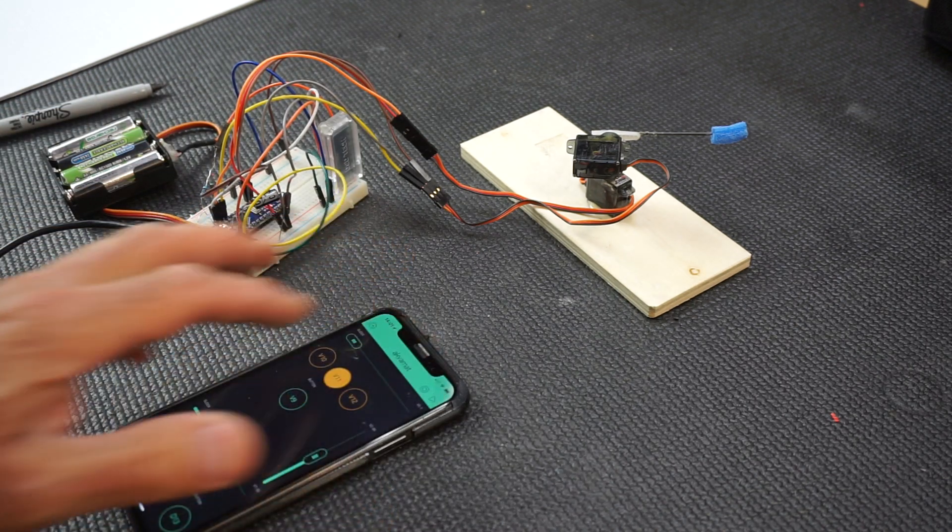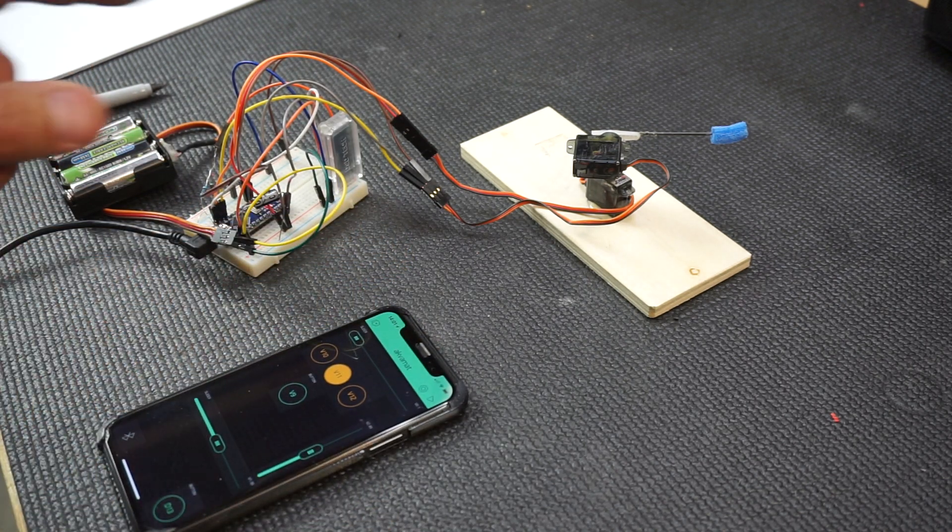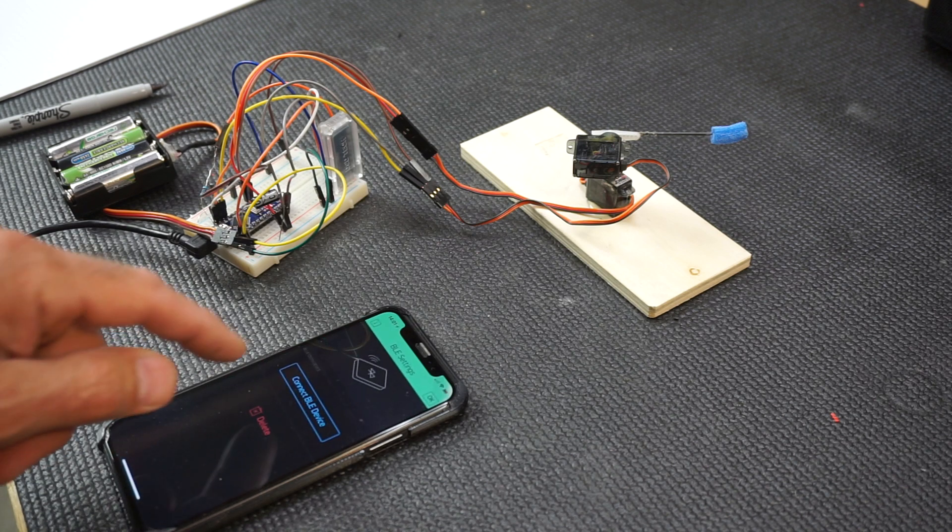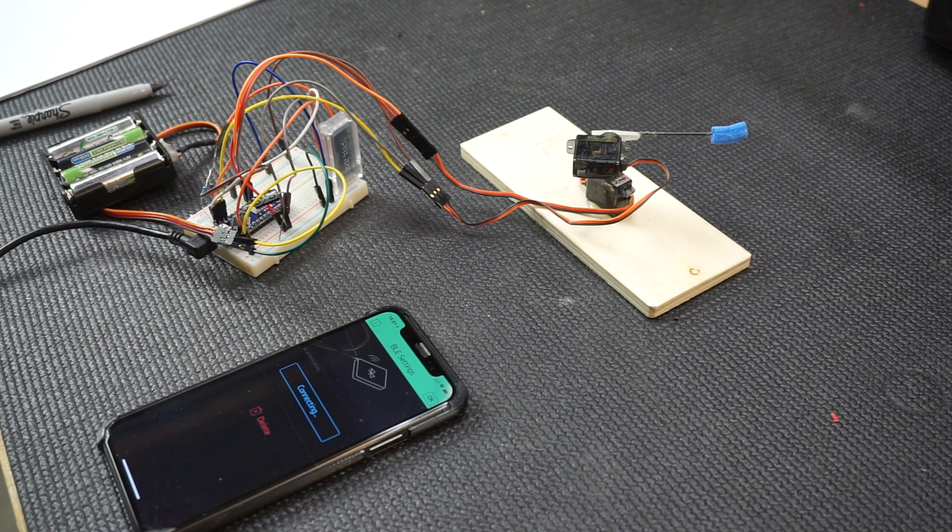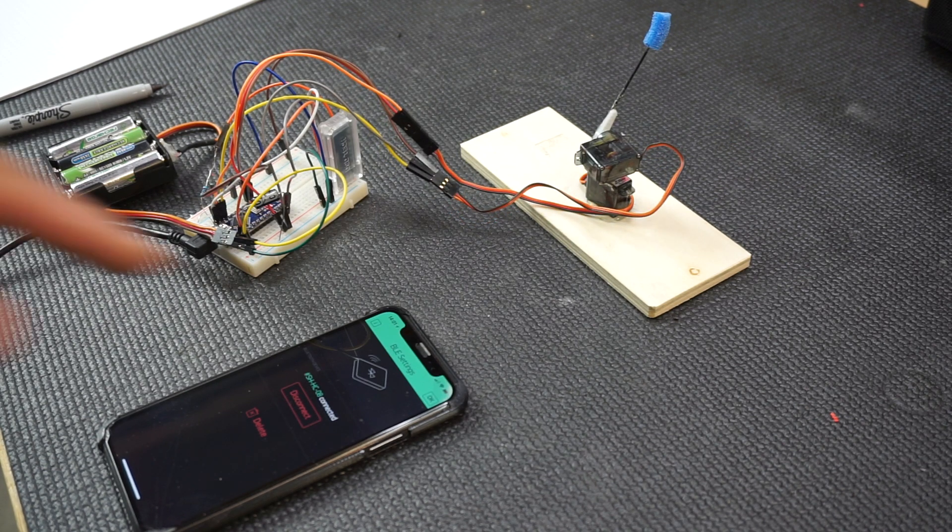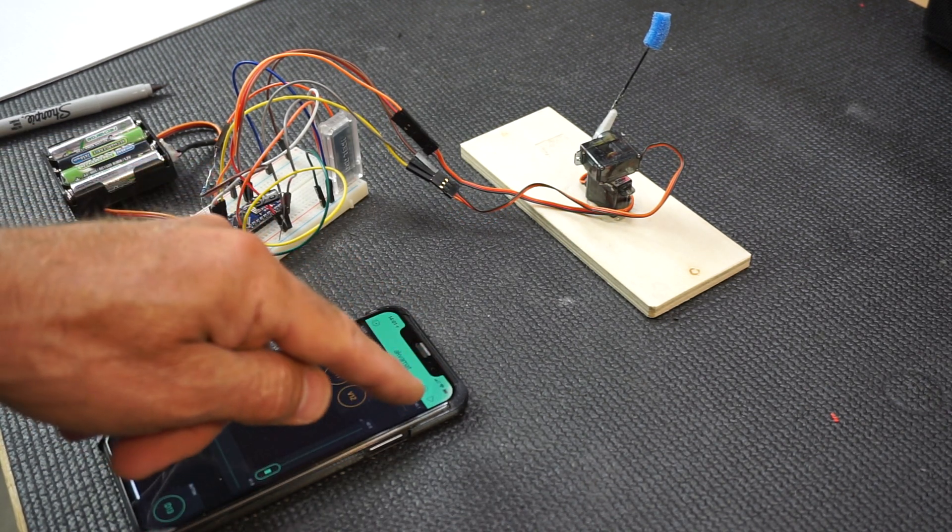First of all I need to connect to the Bluetooth. I am selecting device. Okay. So now device is connected. So I can run my UI.